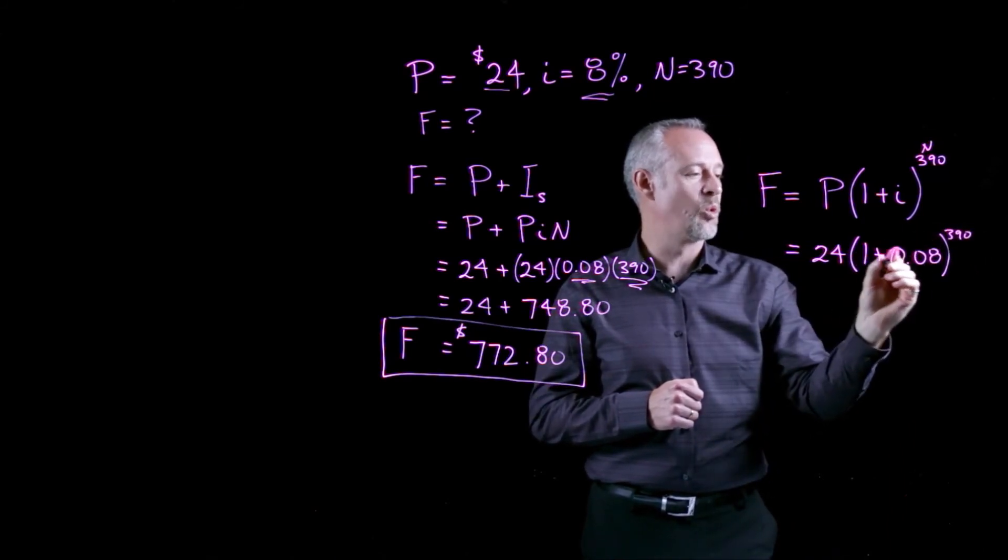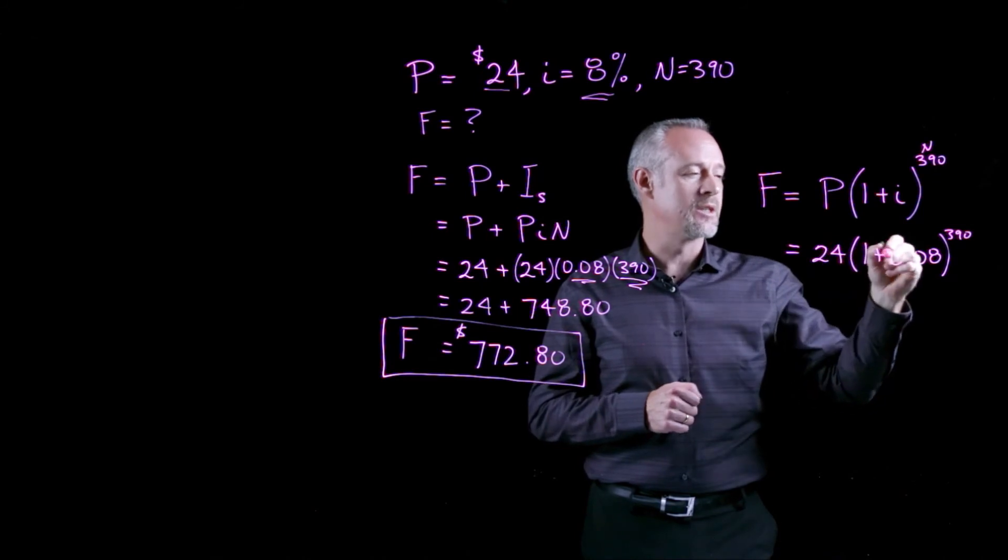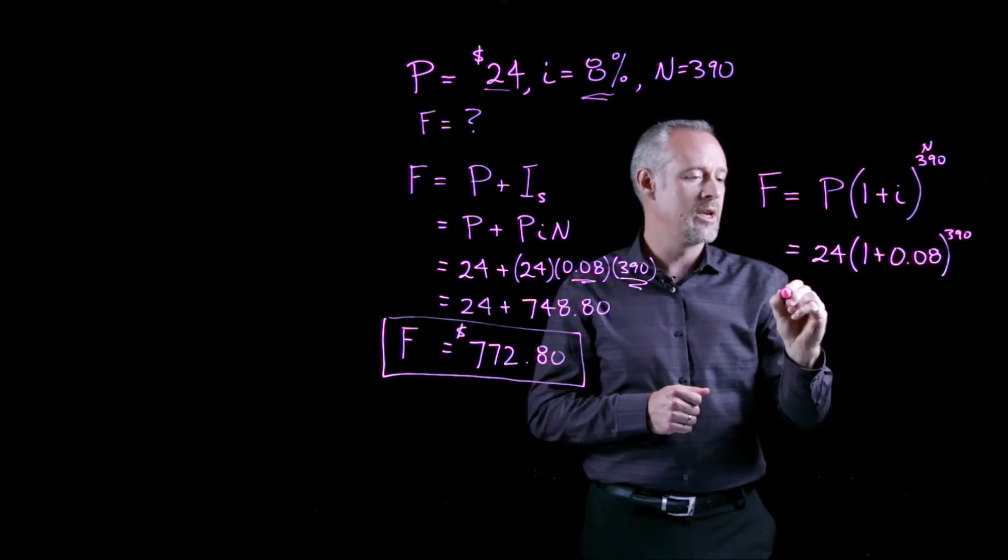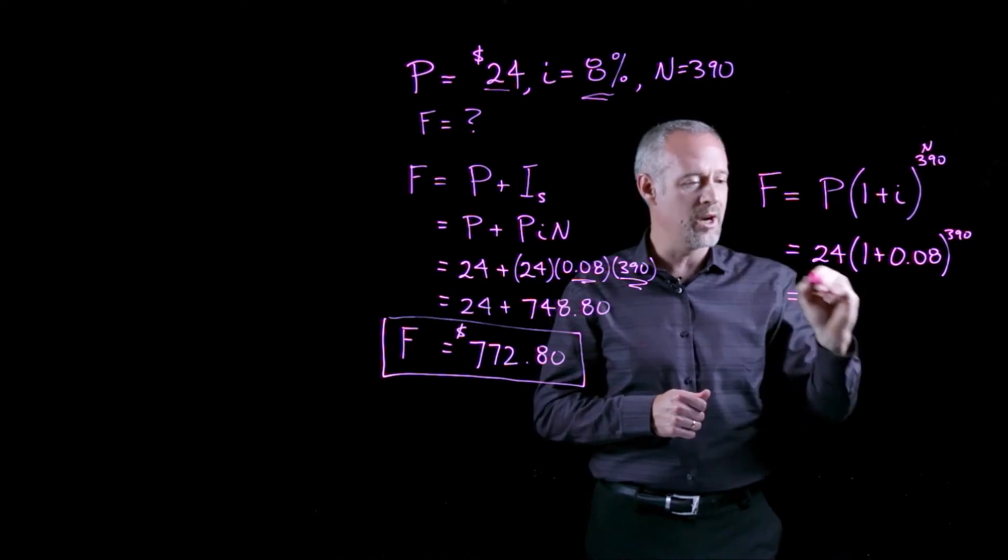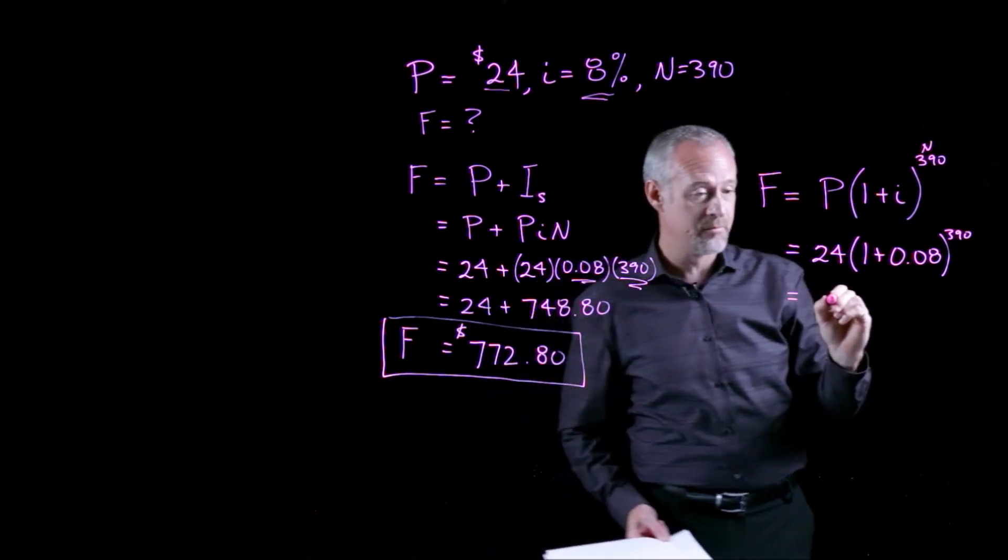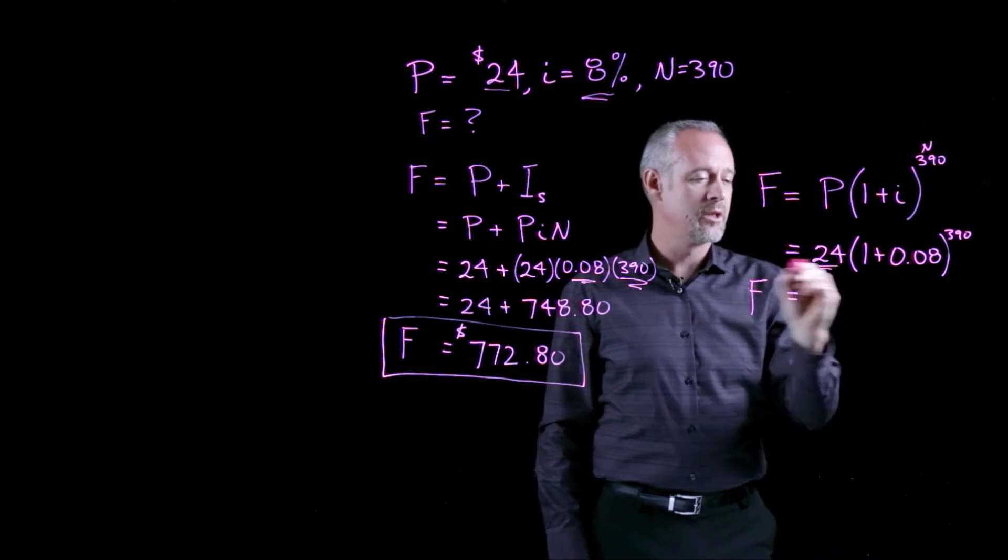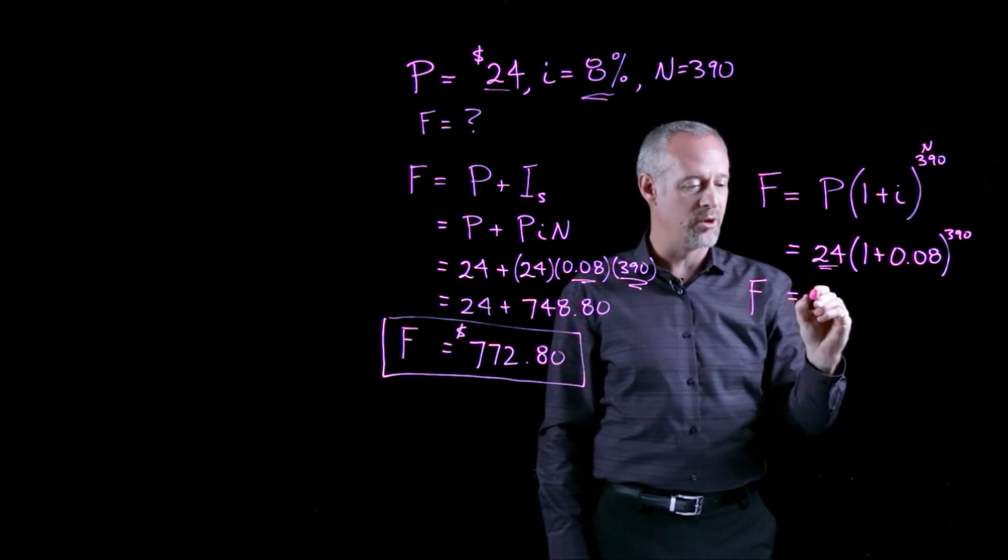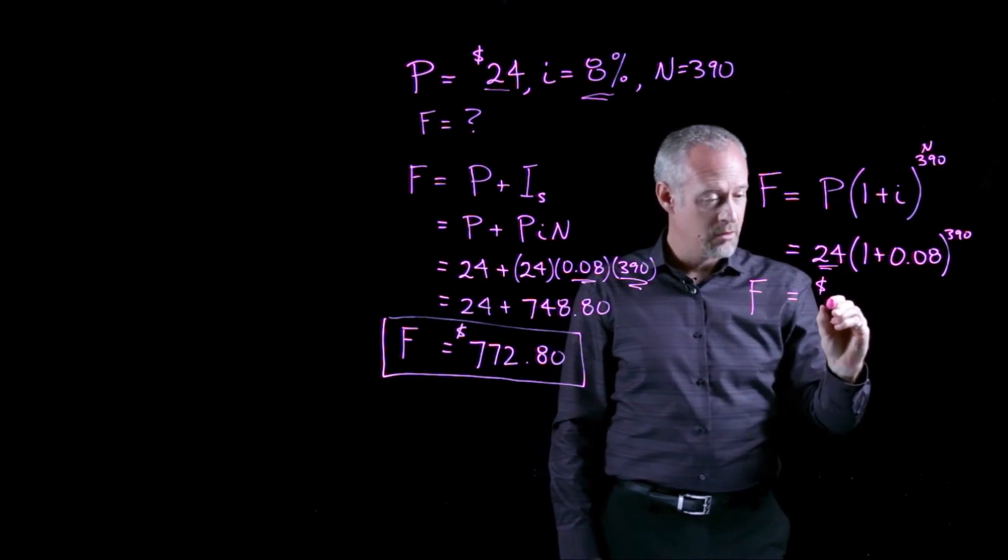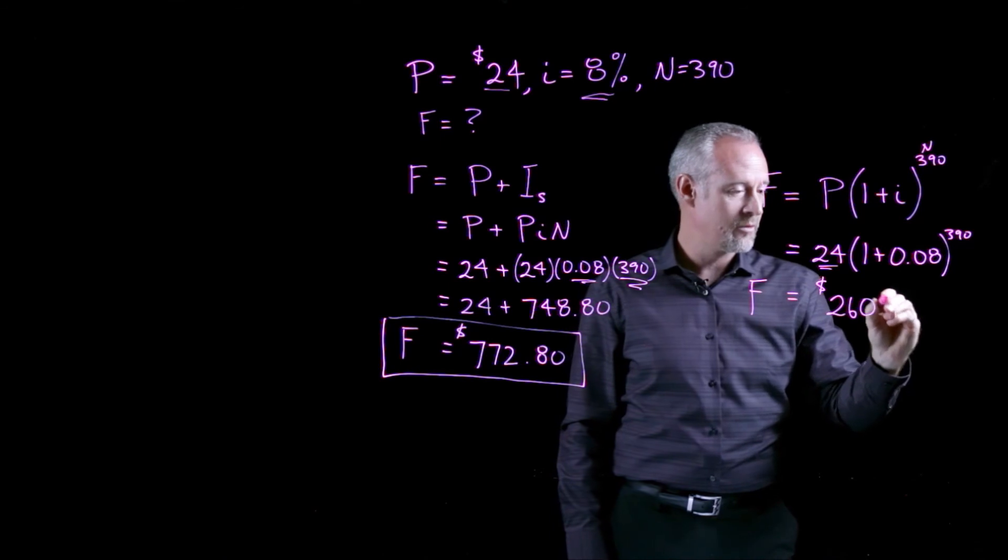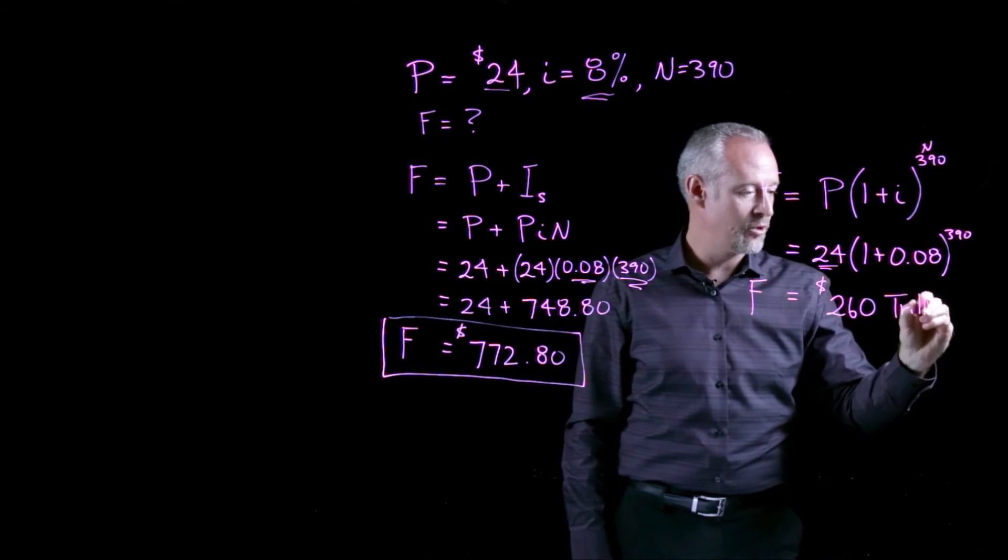So, all that does is it takes 1.08 times 1.08 times 1.08, 390 times. And if you work out what that number actually is, you end up with a future value of the Dutch West India Company's $24 investment of $260 trillion.